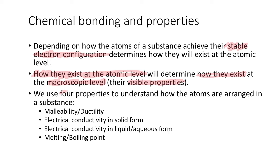We use four properties to understand how atoms are arranged in substances. We use their malleability, also known as ductility. We use their electrical conductivity in solid form, their electrical conductivity in liquid or aqueous form, and we use their melting and boiling point. These are the four properties where the four different types of chemical bonding will have different combinations, and so we can use them to differentiate and broadly classify them into those four categories of substances.